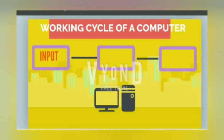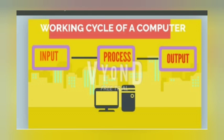Now, see the working cycle of the computer. In the working cycle, first of all, we have to give instructions to the computer, and that is called input. As we give the instructions, the computer works on the given instruction — that is called the process, meaning the computer is working on the given input. And after processing is complete, it gives you the result. That is called the output.